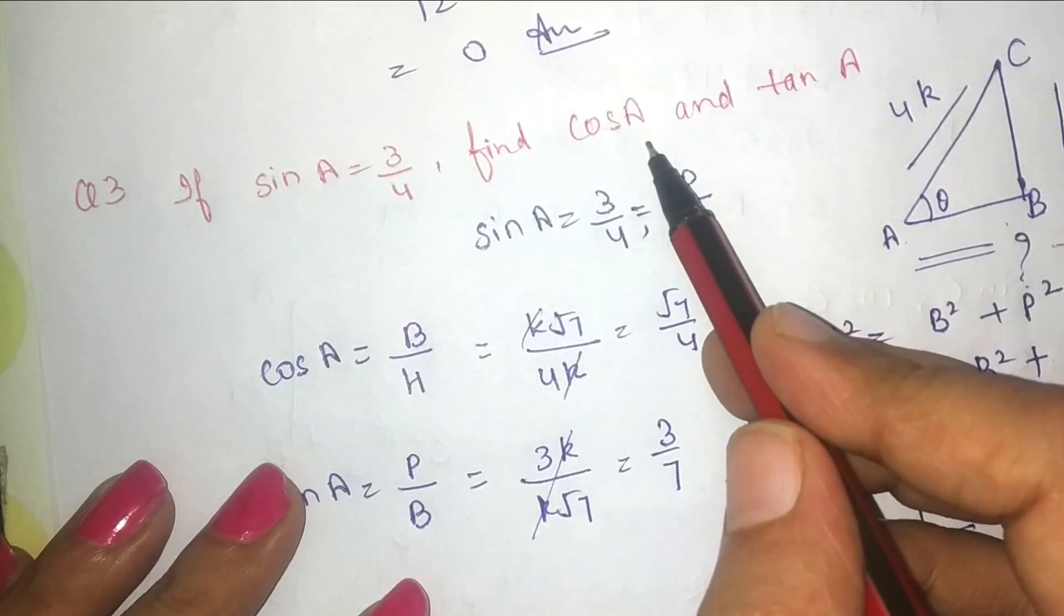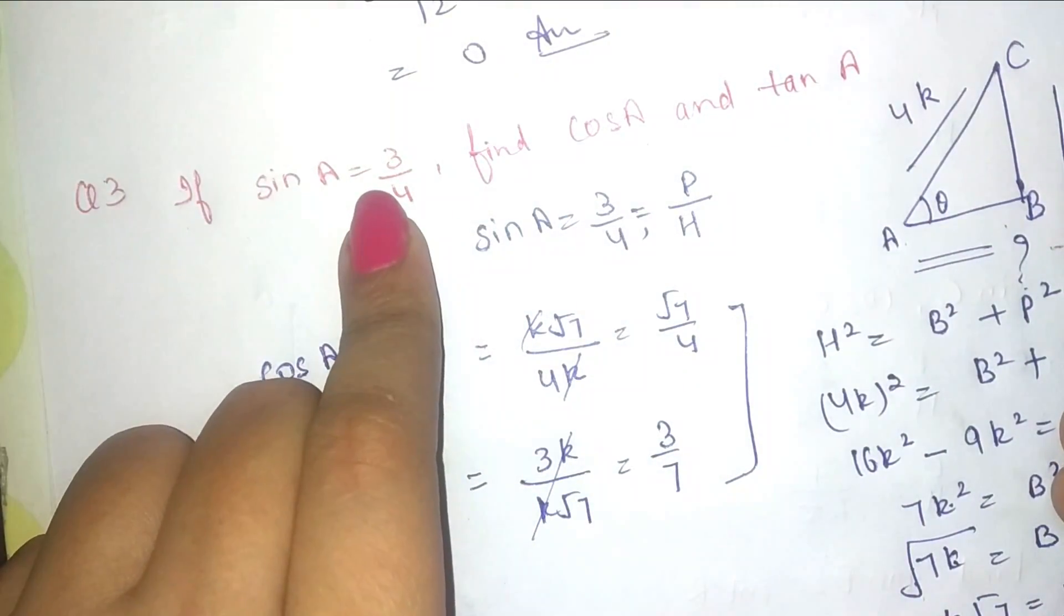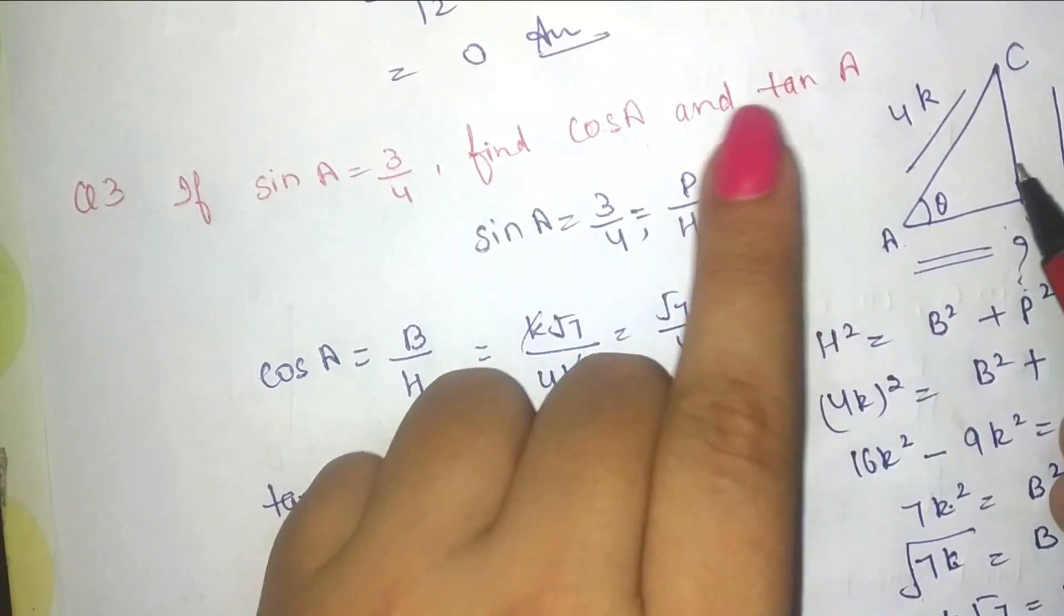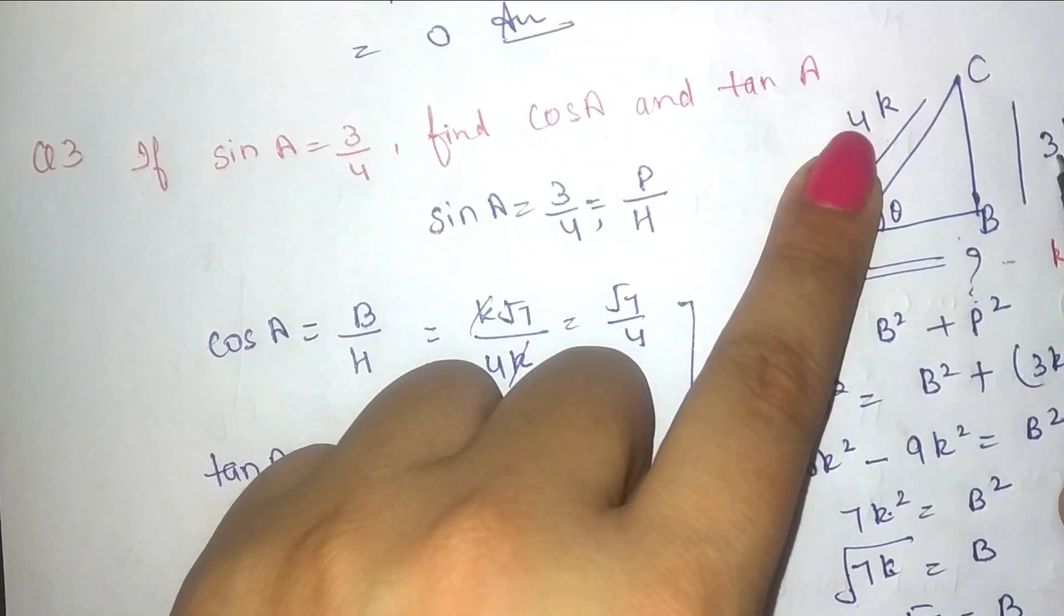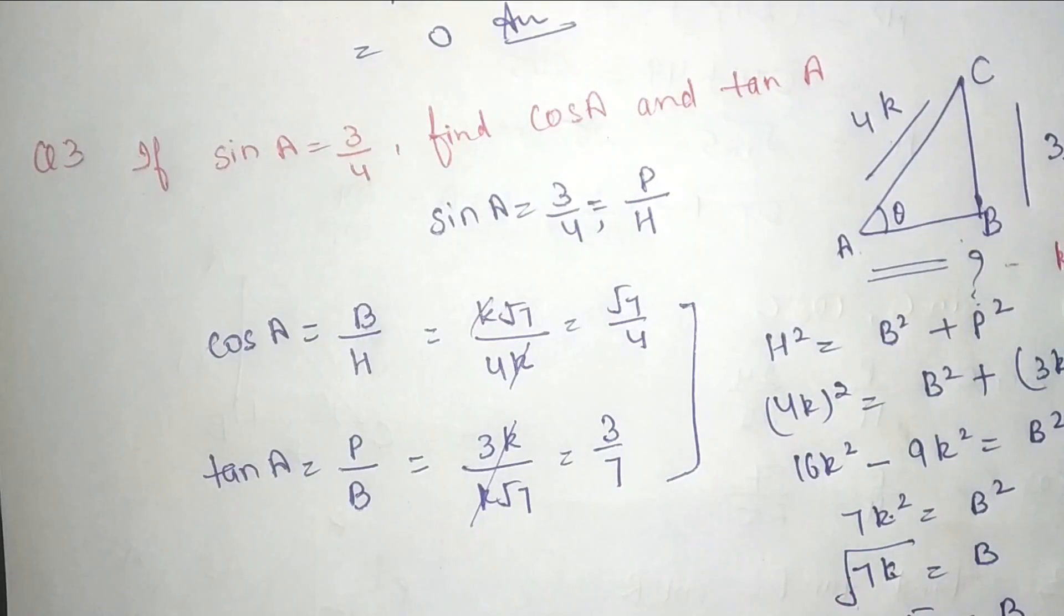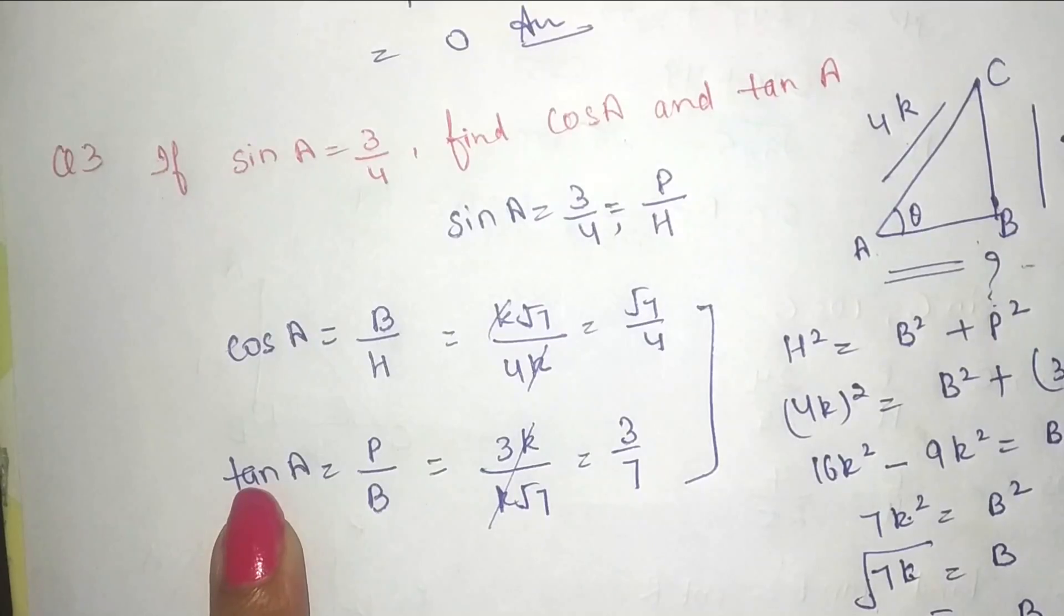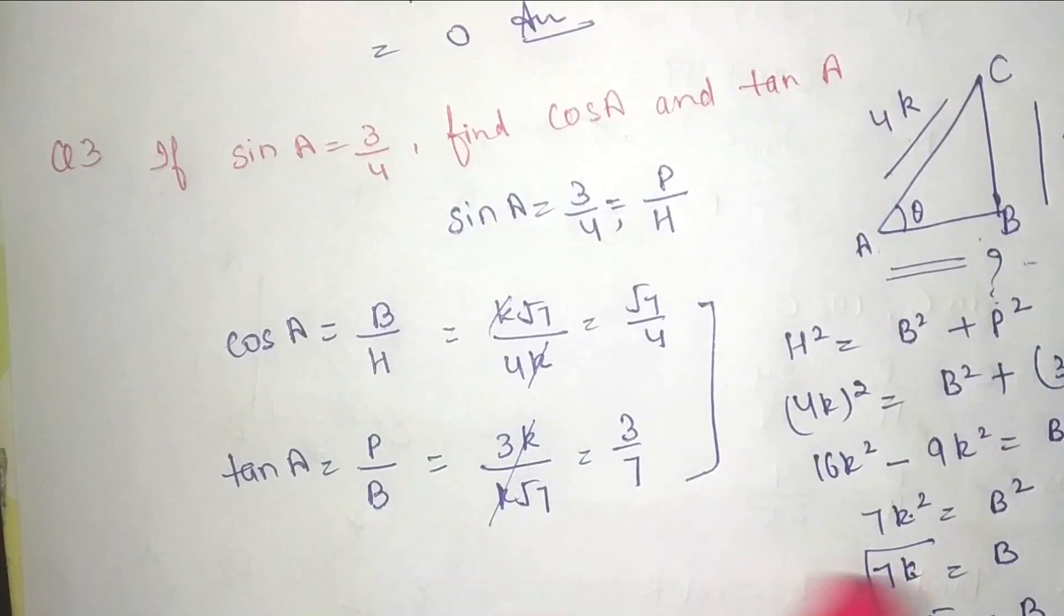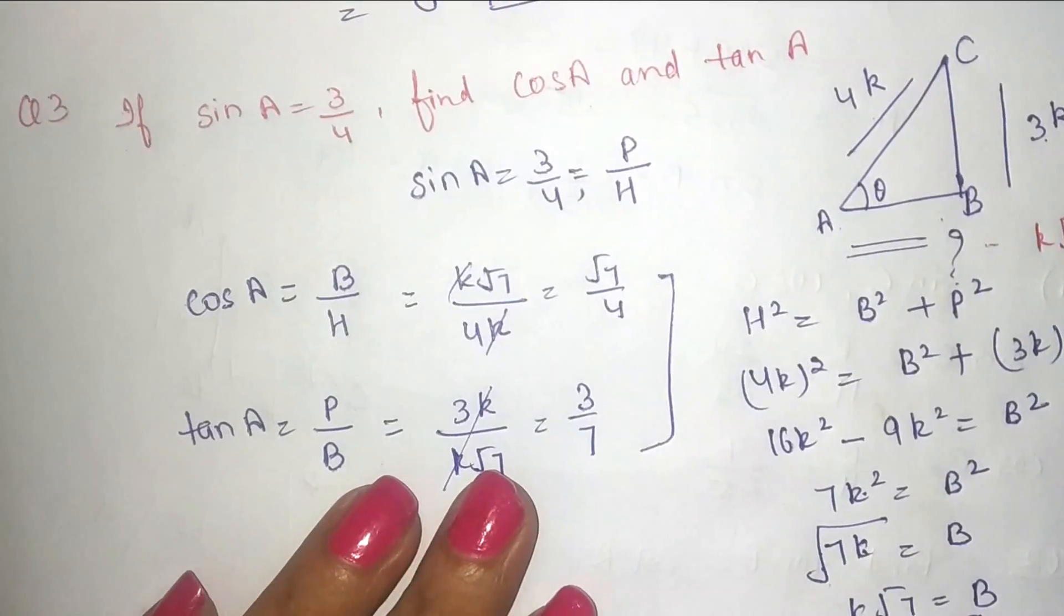So these are the two values that we need to find out. Triangle meh agar aapko already ratios given ho toh triangle meh humne values ko likha, ratios meh given thi, isiliye humne usko directly apply nahi karenge, humne iske saath ek constant value laga denge k aur phir hum Pythagoras theorem apply karke base ki value find out karenge. And then simply jo table aapko bataya tha chapter ke beginning meh, uski help se aap cos and tan ki values table se likhenge and you will get the answer. Now move to next question.